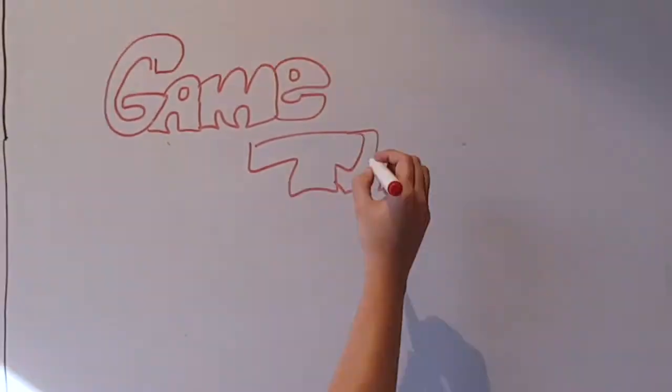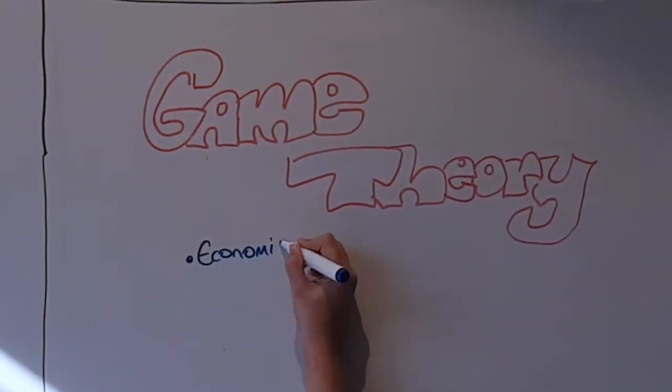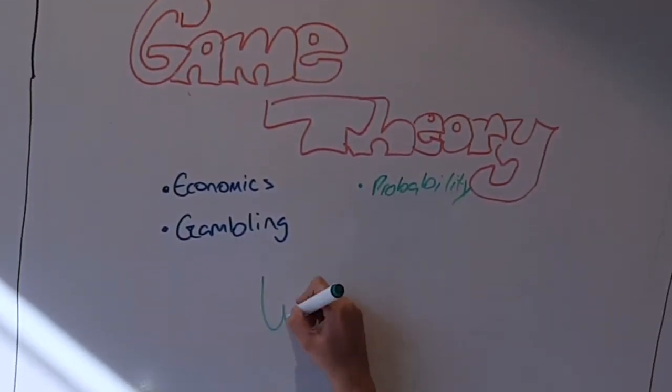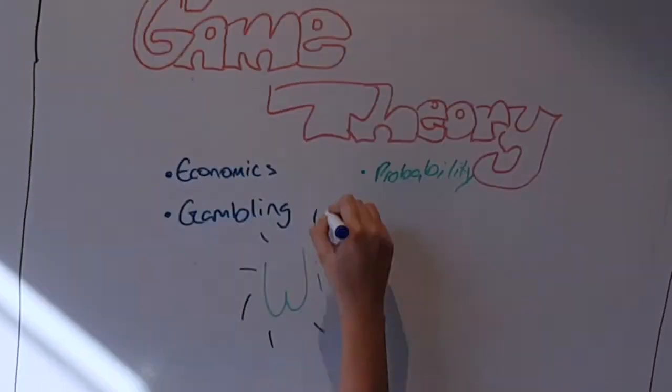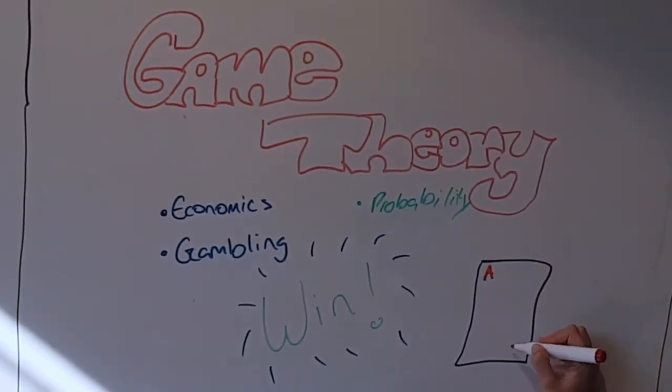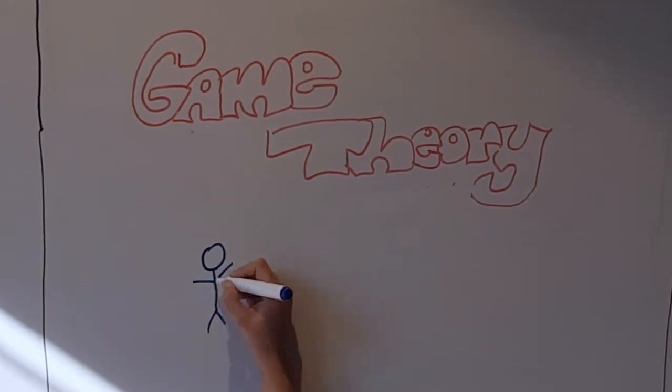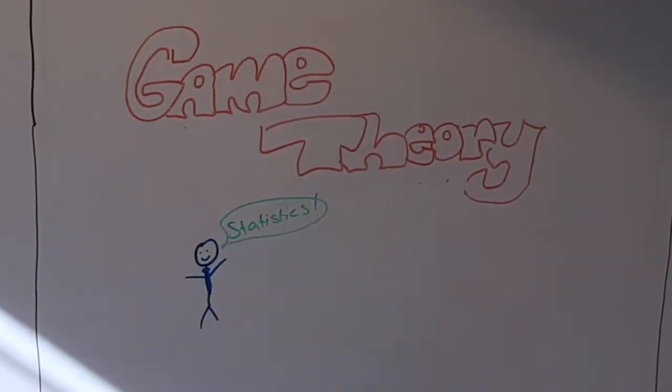Game theory can be applied to a multitude of fields, including economics and gambling. Ultimately, game theory takes mathematical topics such as probability and applies these to certain games to work out the best way to win. Neumann's contributions to this topic have primarily helped statisticians.